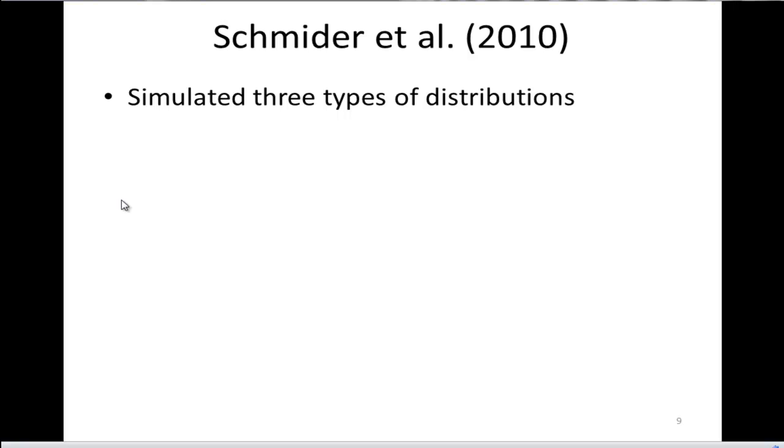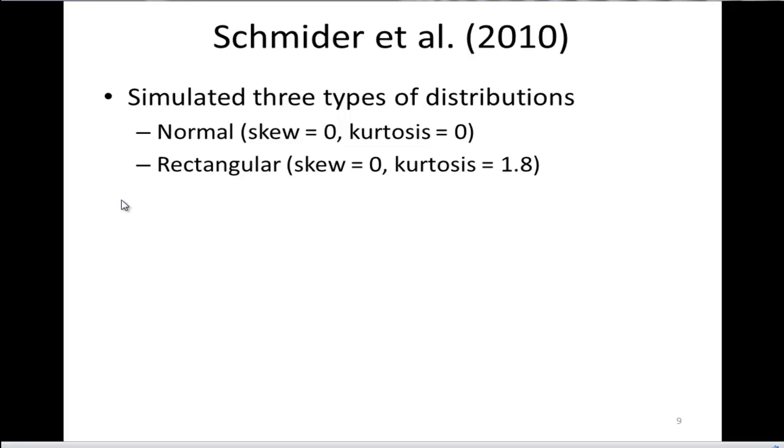Schmider et al. simulated three distributions: a normal distribution with skew of 0, kurtosis of 0; a rectangular distribution with skew of 0 and kurtosis of 1.8; and an exponential distribution, very non-normally distributed data with skew of 2 and kurtosis of 9.